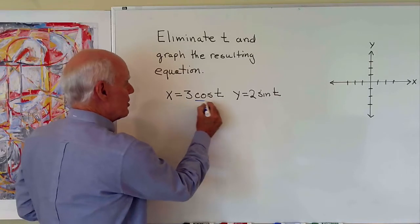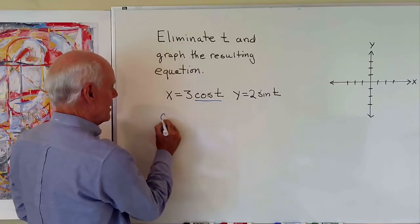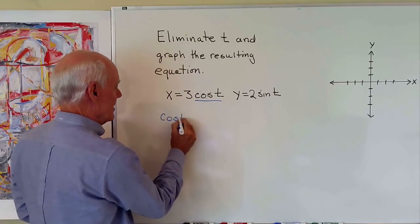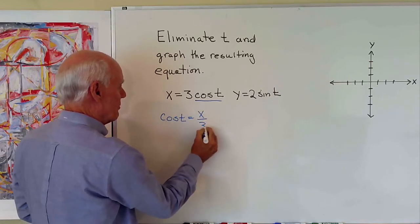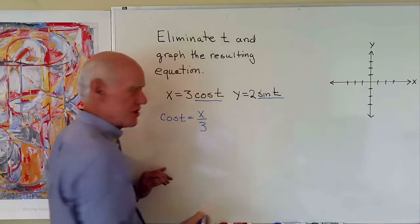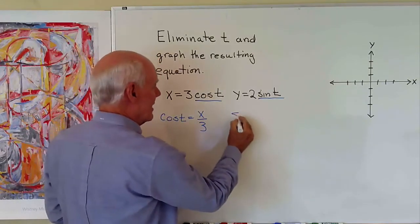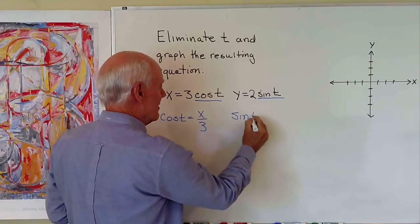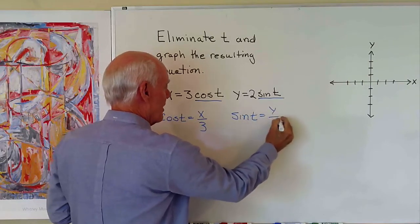So I'm going to solve this equation for cosine t. So cosine t is going to be equal to x over three. Likewise, when I solve this equation for sine t, I'm going to get sine t is equal to y over two.